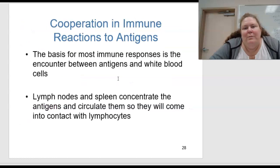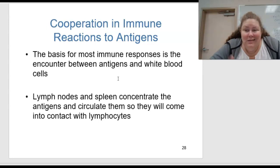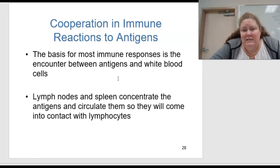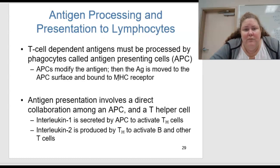What about cooperation in immune reactions to antigens? The basis for most immune responses is the encounter between antigens and white blood cells. The lymph nodes and spleen concentrate the antigens and circulate them around the body so they will come into contact with lymphocytes — the lymphatic system acts like a highway to get these cells where they need to go.